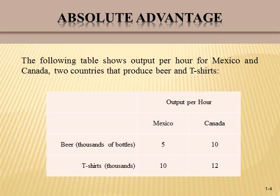Let's take an exercise about absolute advantage. The following table shows output per hour for Mexico and Canada, two countries that produce beer and t-shirts. We can see the beer and t-shirts both in thousands. Mexico can produce per hour 5,000 bottles of beer or 10,000 t-shirts, whereas Canada can produce 10,000 bottles of beer or 12,000 t-shirts.